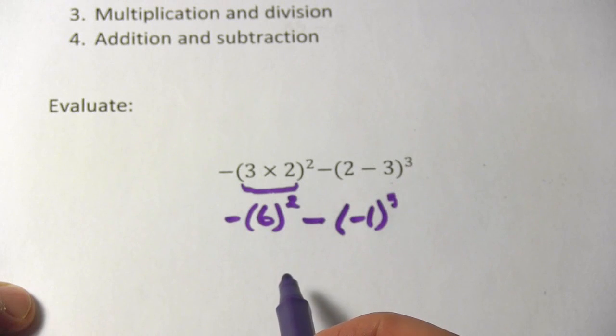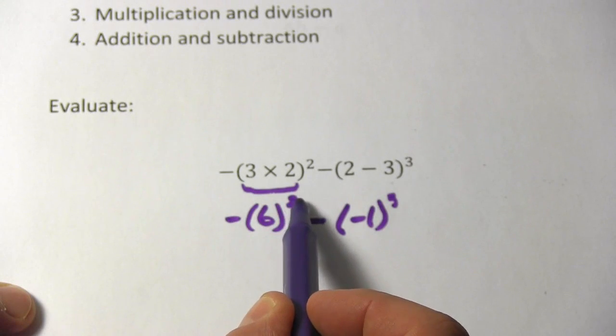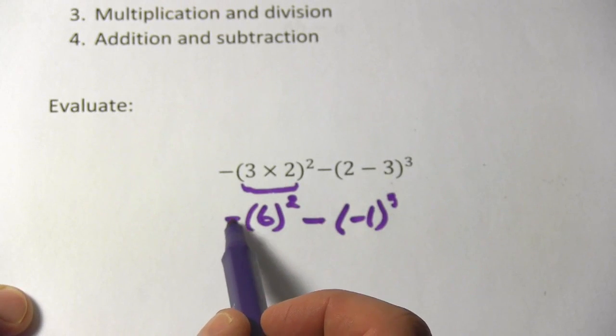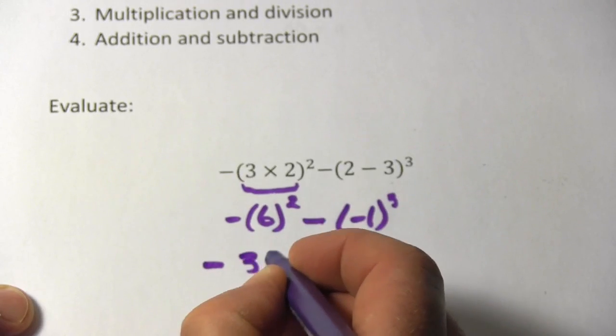Next we need to do exponents. So 6 to the second power, I don't worry about this minus sign out here, it's not inside the parentheses, so I just leave that. 6 to the second power is 36,